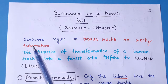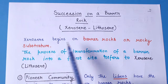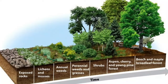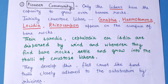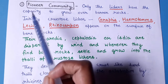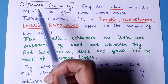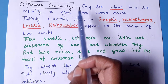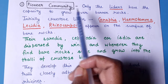Xerosere begins on barren rocks or rocky substratum, and it is the process of transformation of a barren rock into a forest site. Coming to our first stage, that is the pioneer community.